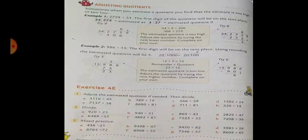Sometimes when you estimate a question, you find that the estimate is too high or too low. For example, 2759 divided by 34,